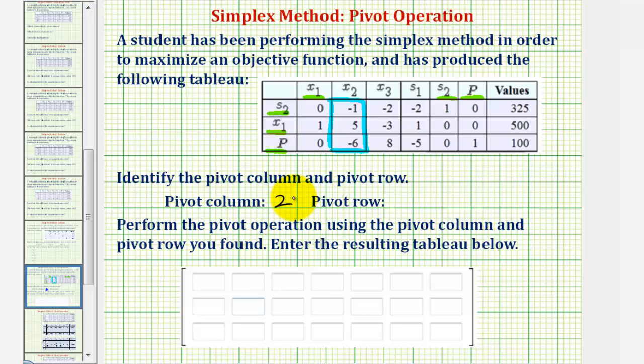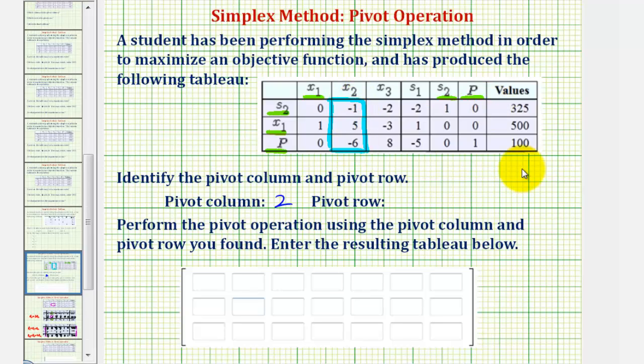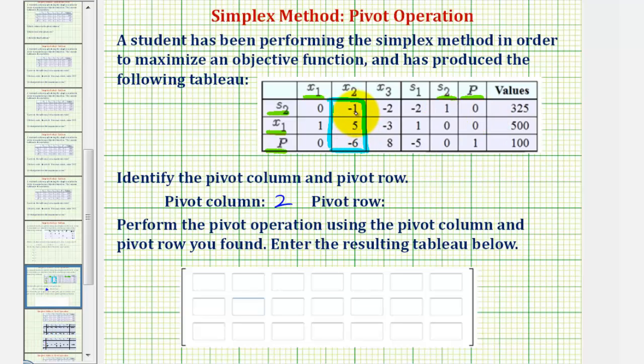And now to determine the pivot row, we take the constants on the far right in this last column and divide by the corresponding entries from the pivot column. The smallest quotient indicates the pivot row, but since the pivot can't be zero or negative, if the entry is zero or negative, we can ignore that row. So notice how we can ignore the first row. We always ignore the third row because this would always be negative. So the only ratio we can find would be from row two, 500 divided by five equals 100. But of course, we don't have to do this because row two is the only possibility for the pivot row.